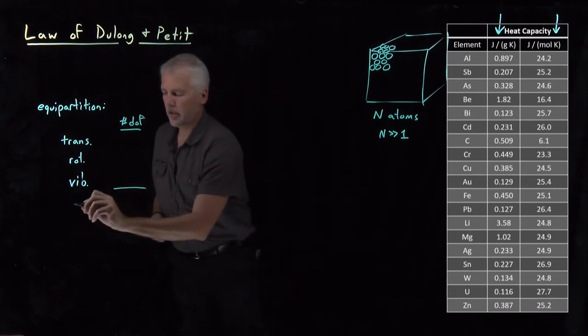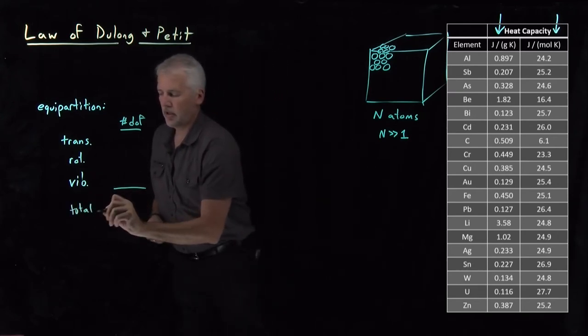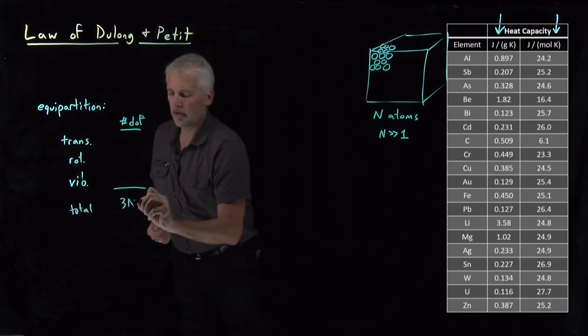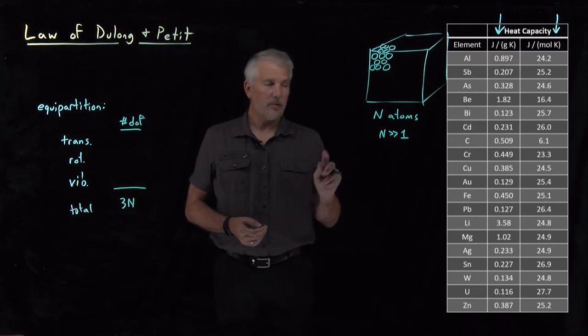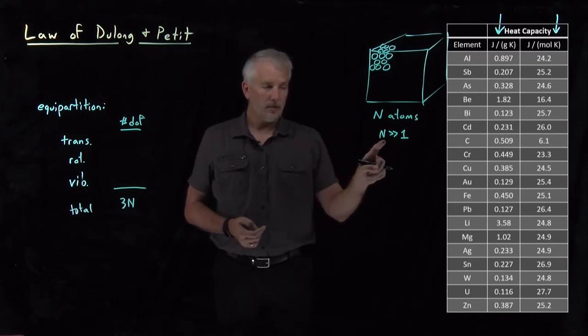we know the total number of degrees of freedom is going to have to be 3N, one for each dimension, one for each dimension, XYZ for each one of the atoms.